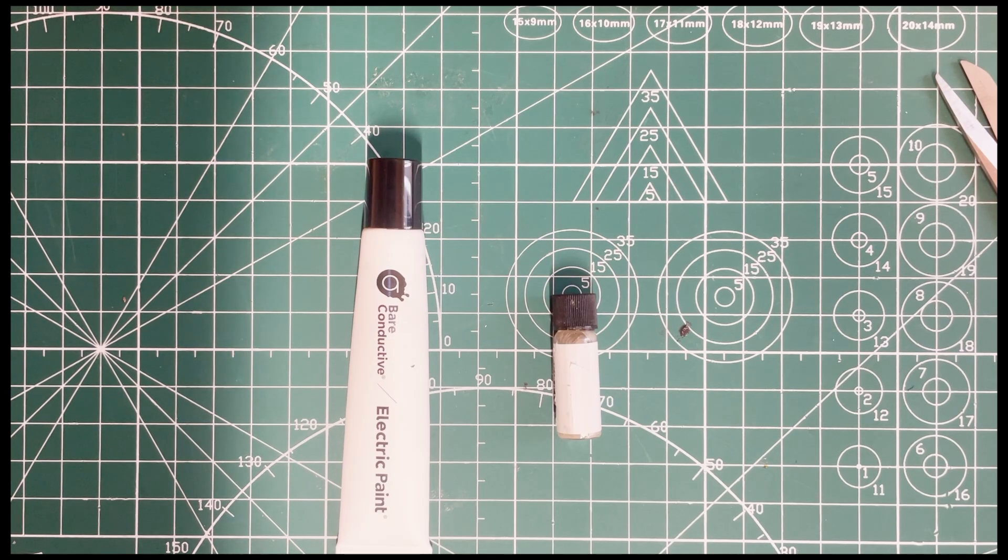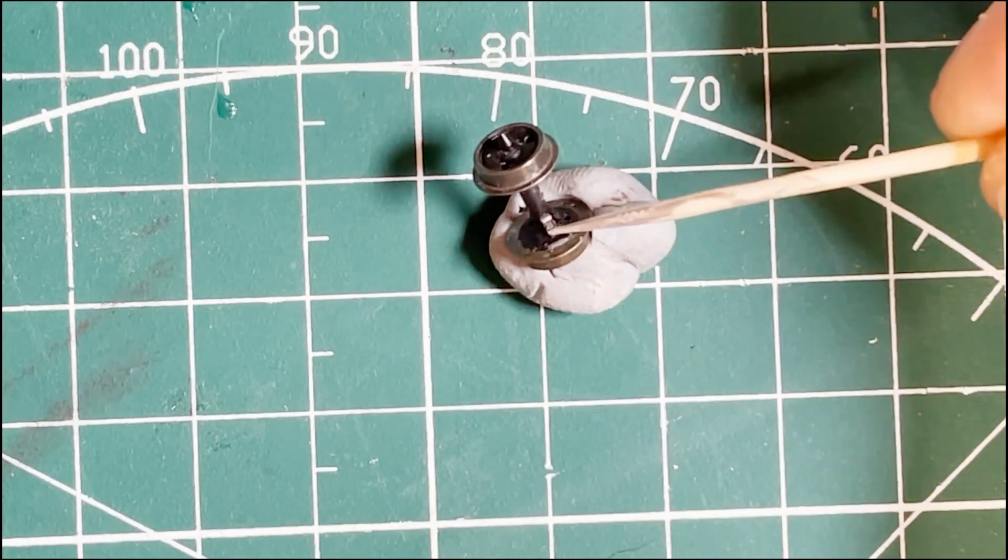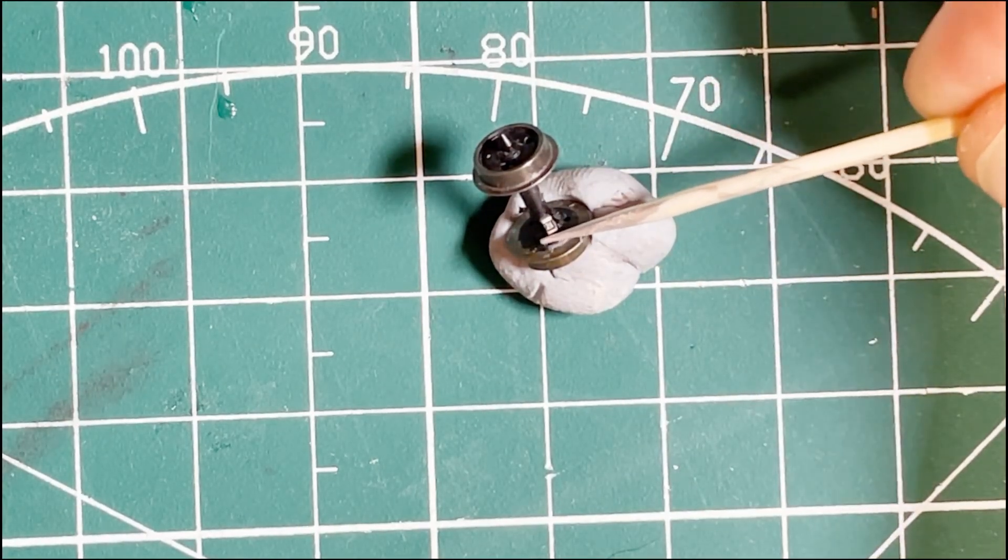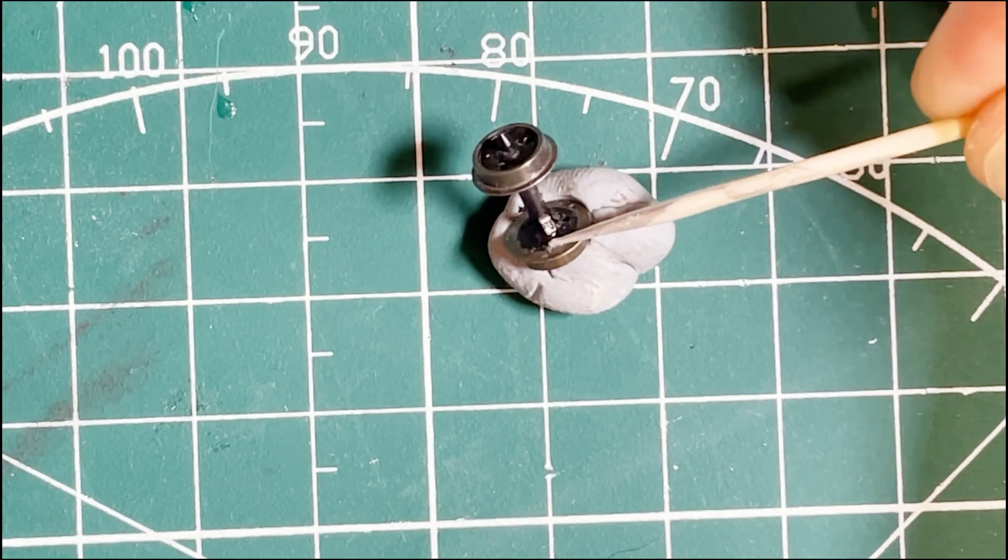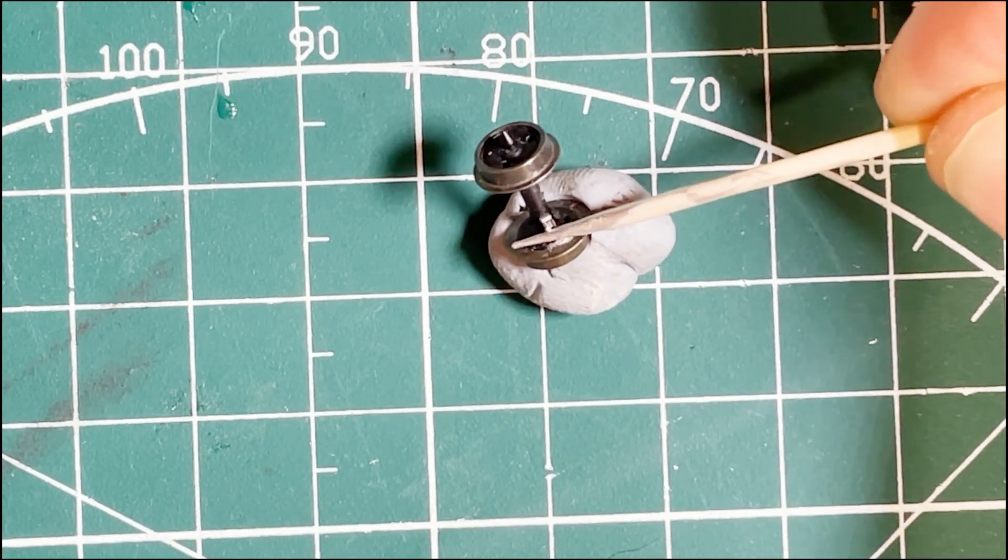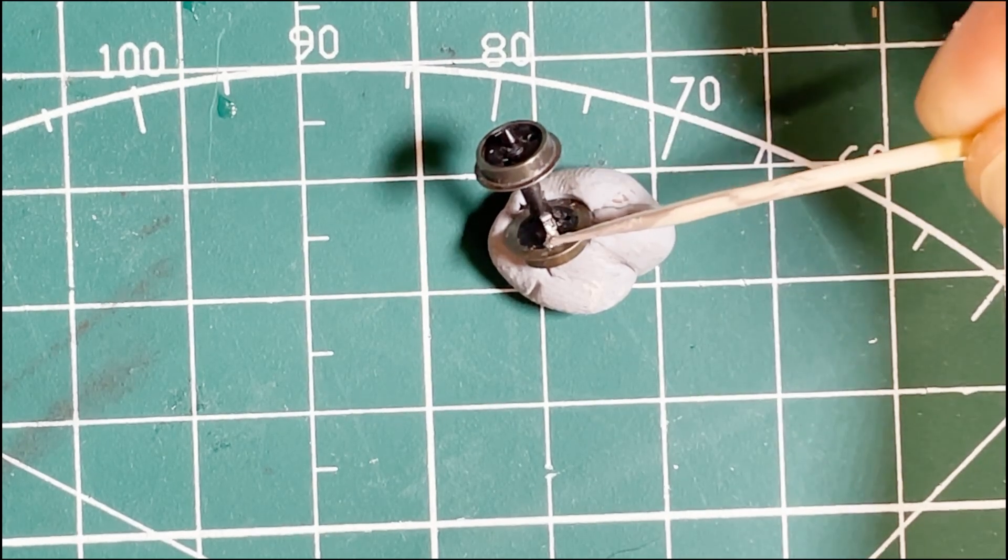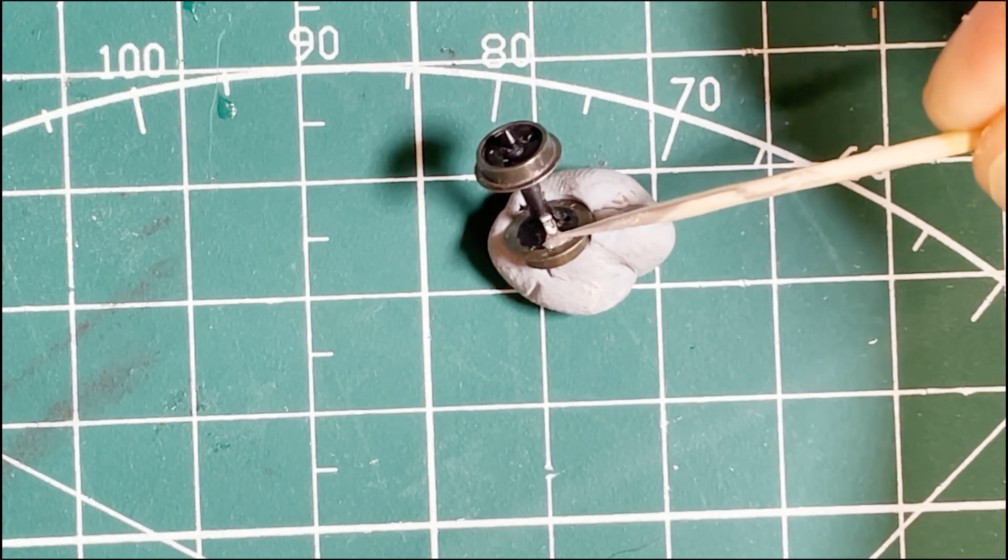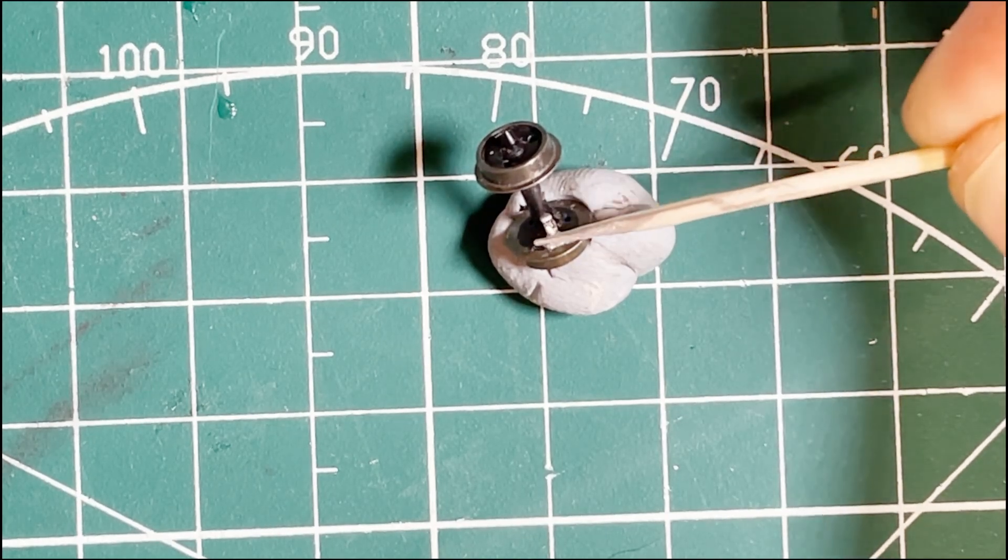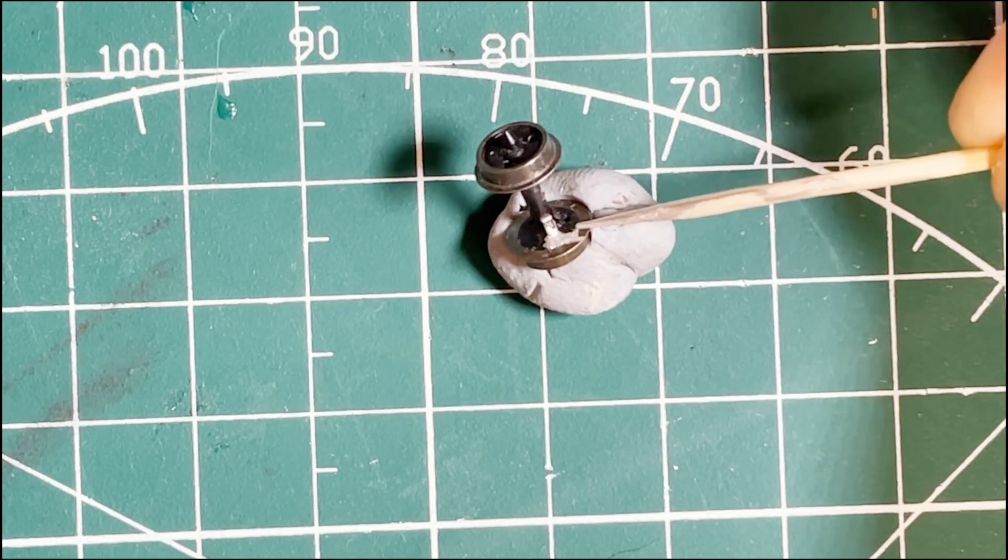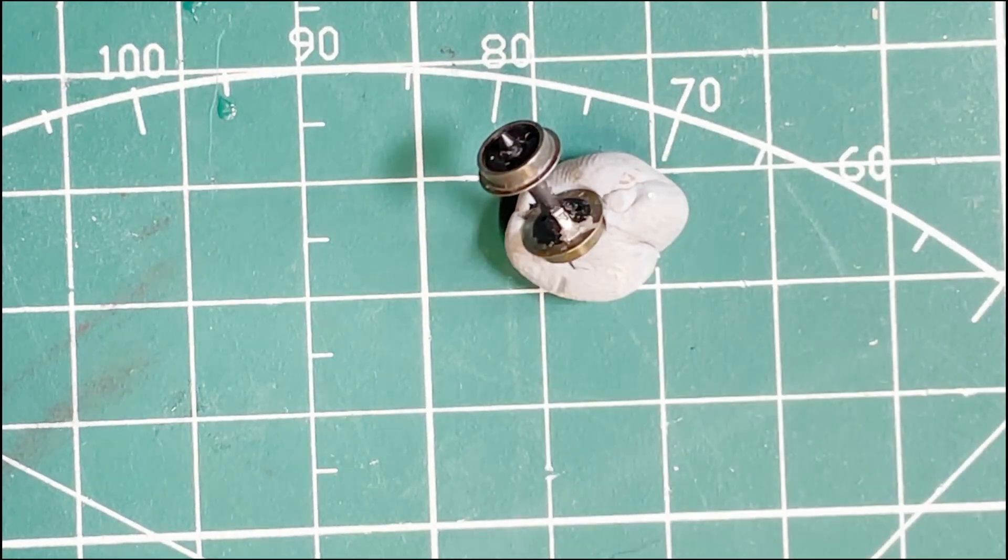So let's start applying the conductive paint. I use a cocktail stick, and normally if I'm not filming it's easier because the cocktail stick is vertical and the paint runs to the tip. It's a little bit more difficult with it horizontal, but you can see just gently apply the paint to make sure we get contact with the resistor and the wheel tire itself. Spread the paint around the tire to make sure we've got a good surface area for contact. Be careful not to bridge the two terminals on the resistor else we'll get a short circuit.